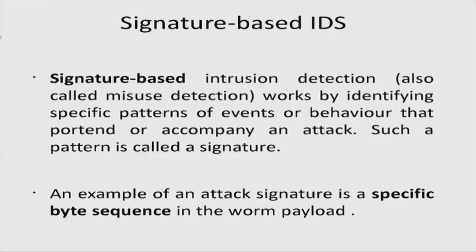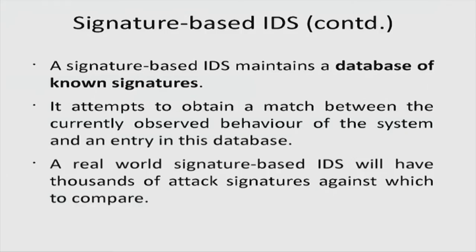Signature-based intrusion detection — also called misuse detection — works by identifying specific patterns of events or behavior that portend or accompany an attack; such a pattern is called a signature. An example is a specific byte sequence in a worm payload. Modern IDS also looks at sequences of operating system calls and dependencies between those calls. A signature-based IDS maintains a database of known signatures and attempts to match currently observed behavior against it. A typical real-world signature-based IDS will have thousands of attack signatures.